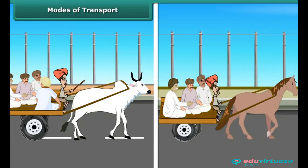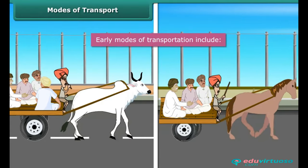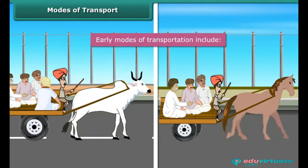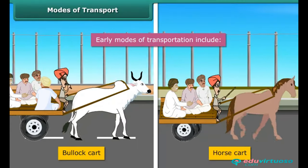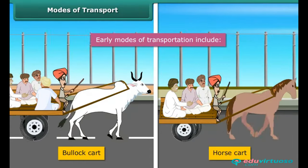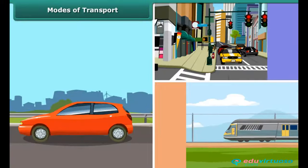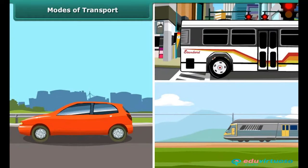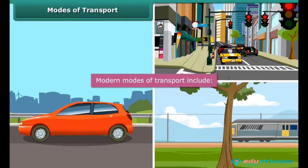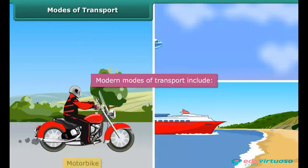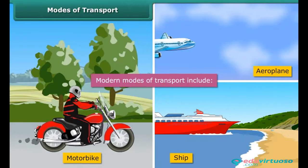Have you wondered how people travelled in the earlier days? In the early days, people have always used animals to travel from one place to another. For example, bullock cart, horse cart, etc. Can you imagine using a bullock cart to come to school every day now? Nowadays, we have progressed and we have learnt we can use fuel and natural resources to create better modes of transport. Hence, we now have cars, buses, roads, railways, motorbikes, aeroplanes, ships, etc. to travel.